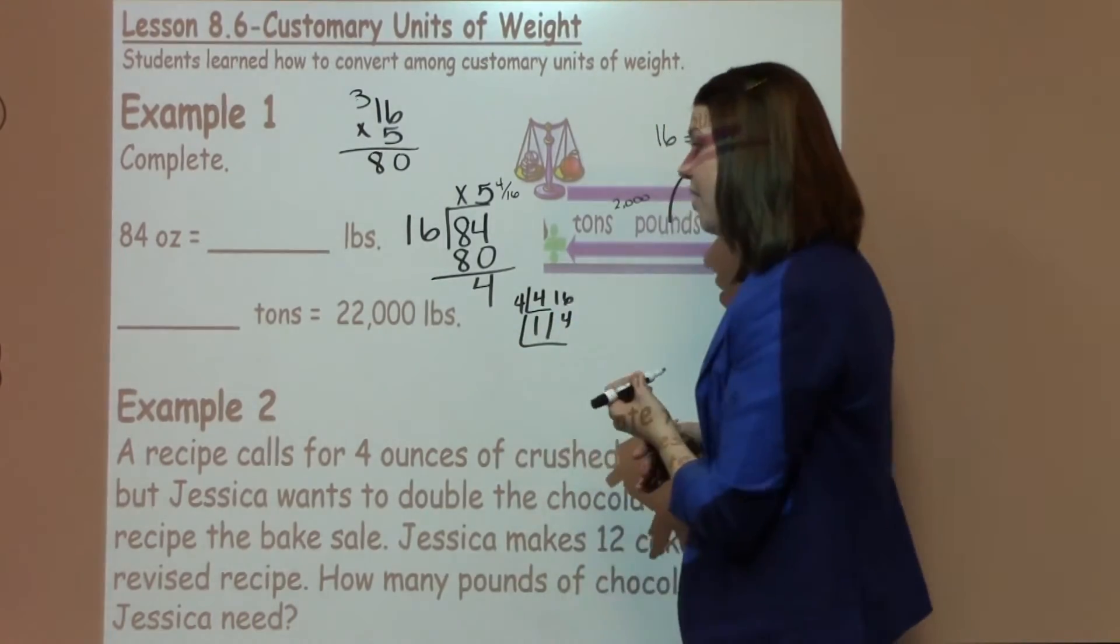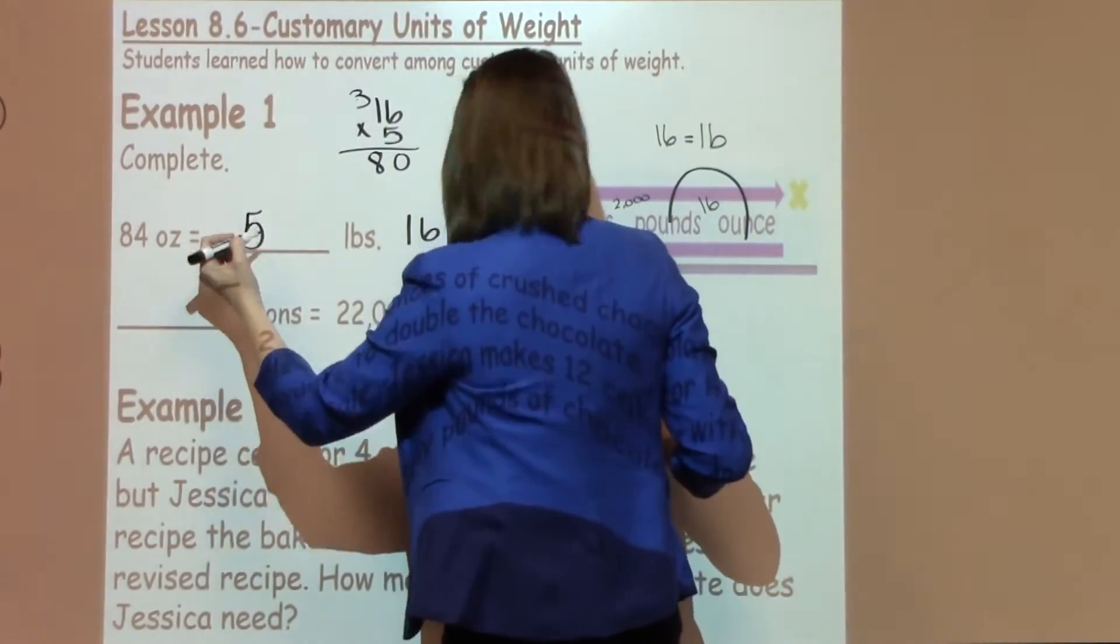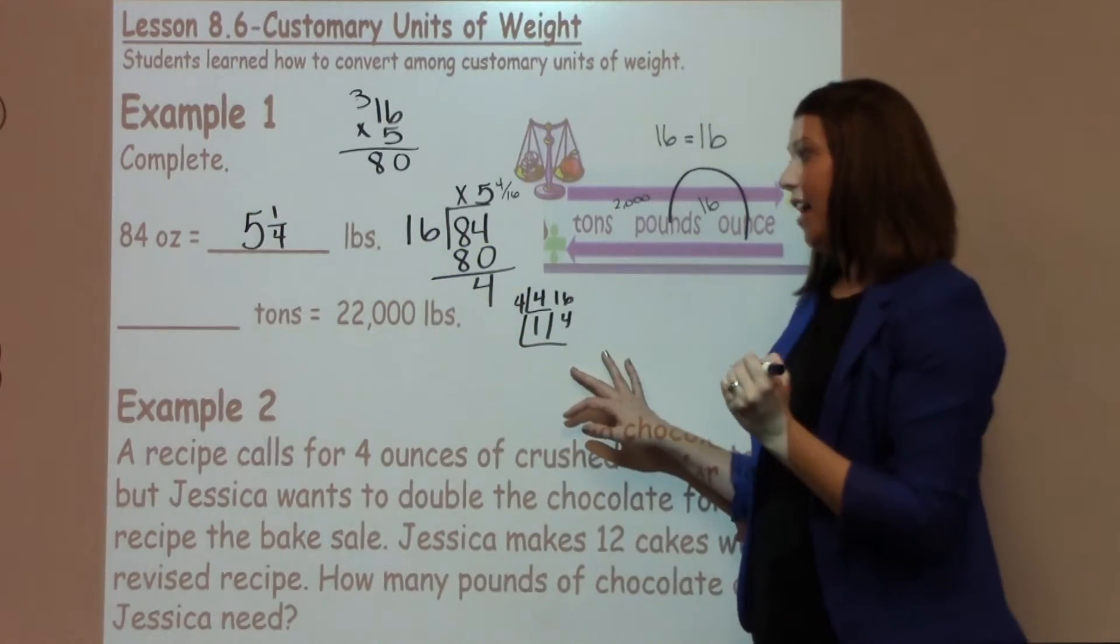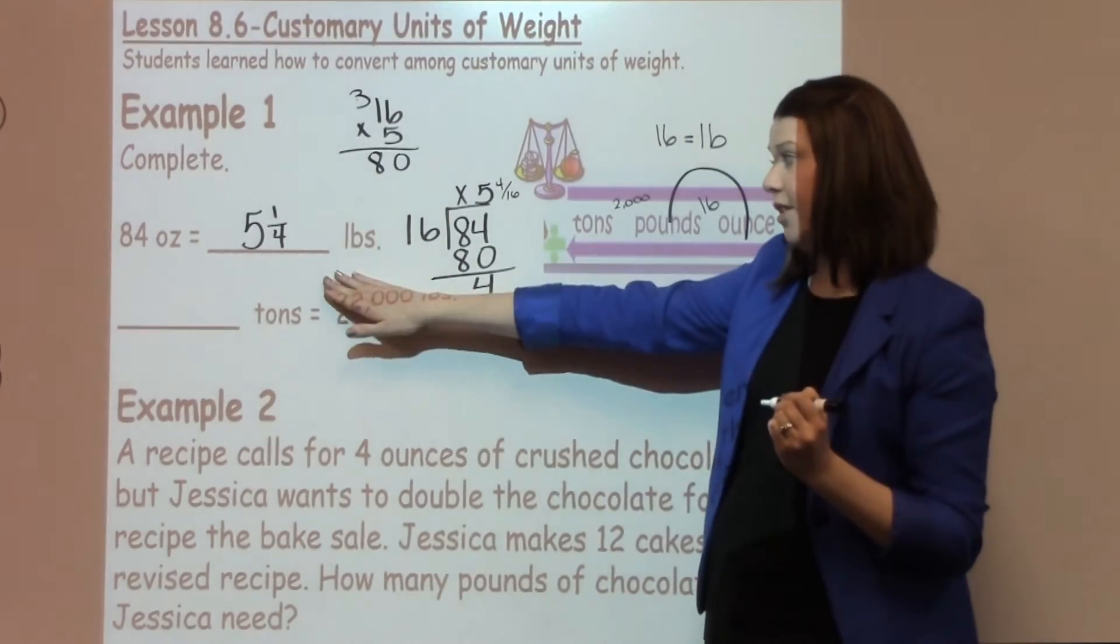So I could have 5 and 1 fourth pounds. Students could also convert that to a decimal if they prefer. Either one is perfectly acceptable. They just need to make sure that they've got that remainder written appropriately for this problem.